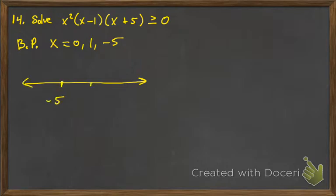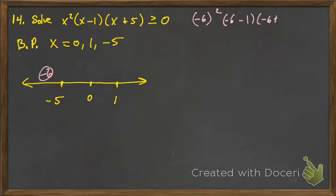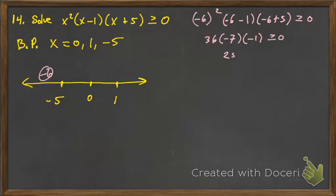So we'll do our sign chart. We need to pick a couple of values. We'll pick negative 6 and plug that into the inequality to see if it's true or false. So 36 times negative 7 times negative 1 — that's a negative times a negative, which is going to be positive. So that is true for the first interval, and we'll accept that.